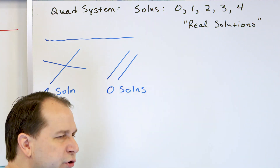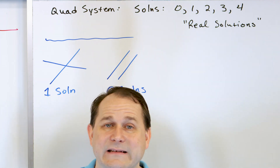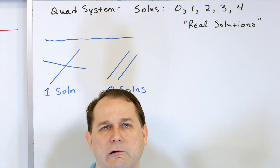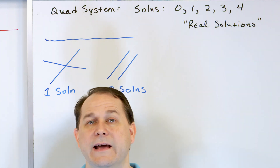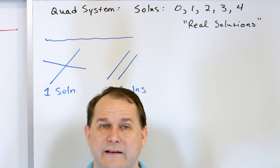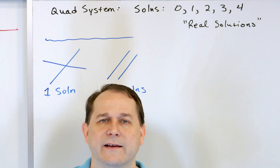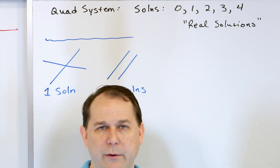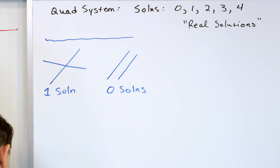It's very common when solving a system of equations to have no solution at all. It doesn't mean something magical is happening — it just means the graphs don't cross, so there's no commonality between the two equations and no solution that satisfies both.